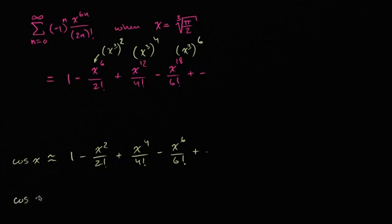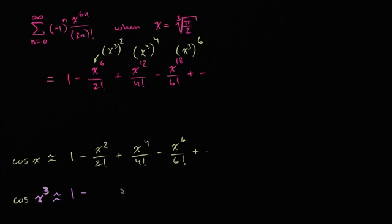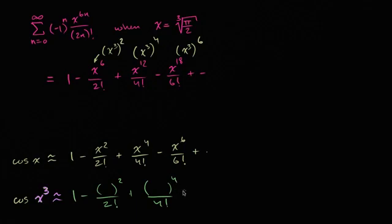To do that replacement, we just take cosine of x to the third. The cosine of x to the third equals one minus x to the third squared over two factorial, plus x to the third to the fourth over four factorial, minus x to the third to the sixth over six factorial — which is exactly the power series we have up here.